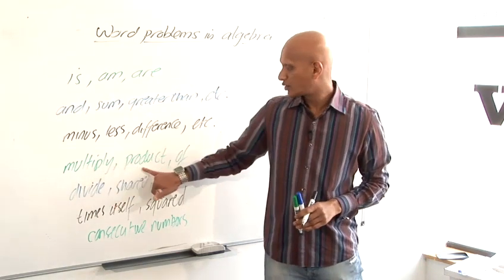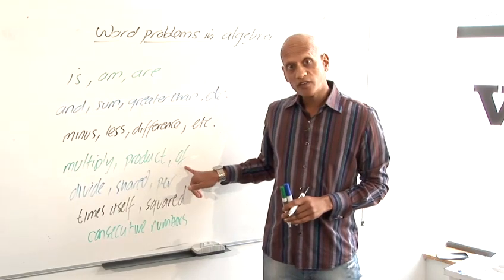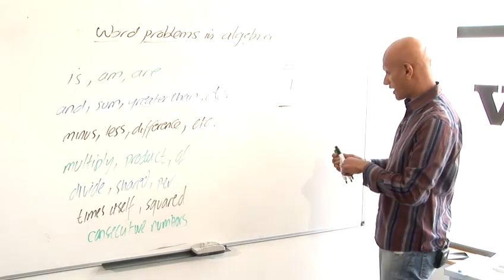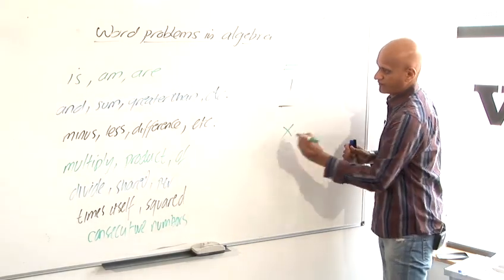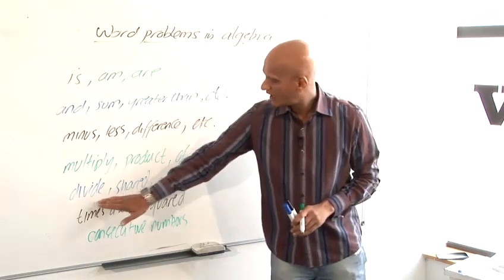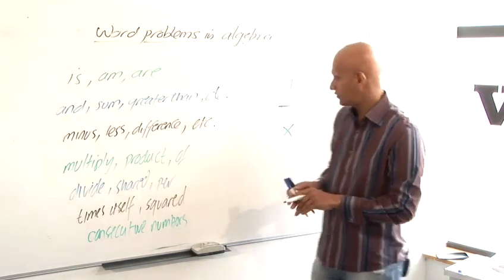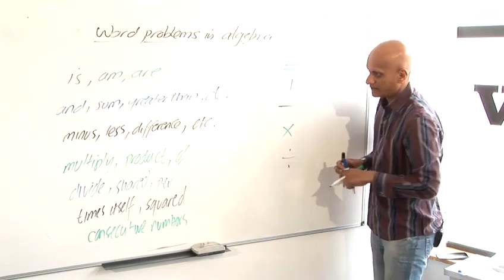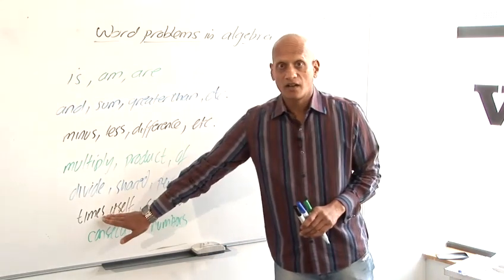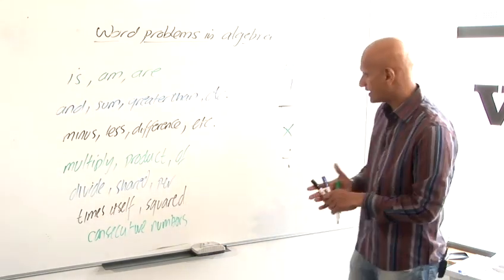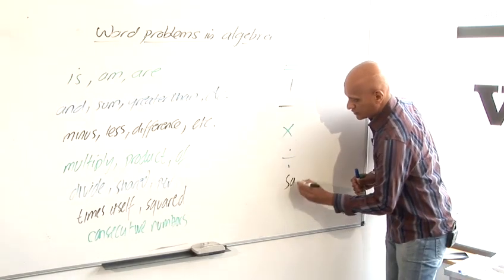Multiply by, product, and of are all multiplied by signs. Divide, shared, per would be a divide by sign. Times itself is another way of saying squared. So that would be square.